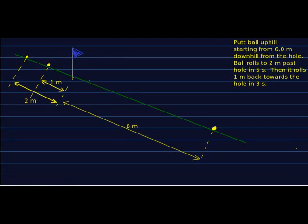So let's do an extended example to see how some of these ideas work. So here we're putting a ball, we're putting uphill, and we're starting six meters below the hole. And the ball rolls two meters past the hole, and then one meter back towards it. And the first thing I'm going to do is define axes. And remember, we can define them any way we want. I'm going to choose to put my origin at the hole, and I'm going to set the positive direction for x down the hill. Now we're not going to need a y-axis, but I'm going to put it there so that we see where the origin is. So I've just defined down the hill as my positive direction.